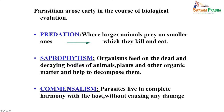Parasitism arose early in the course of biological evolution. Like predation — where larger animals prey on smaller animals, killing and eating them — this is the rule of nature. Similarly, saprophytism involves organisms that feed on dead and decaying matter, decomposing them into common elements like carbon, hydrogen, nitrogen, and oxygen. Commensalism is another relationship where parasites live in complete harmony with the host without causing any damage.